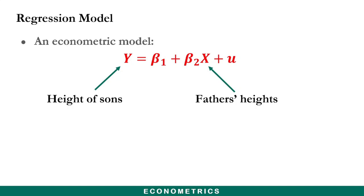We can also see the u parameter present in the model, which represents unobserved factors. These are other factors that can also affect the height of sons but are not included in the model. Some of these factors could include the mother's height, the nutrition of the sons, or the health status of the father.